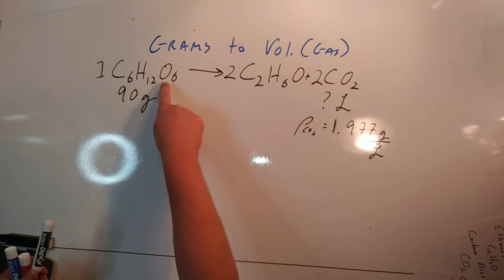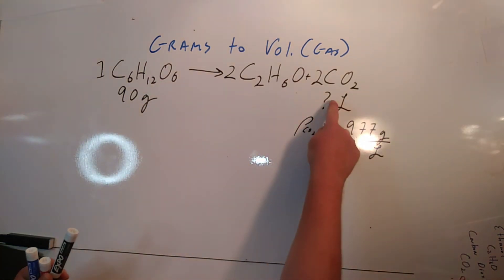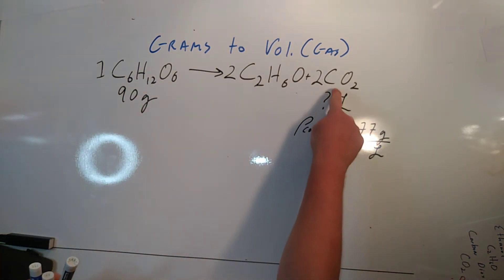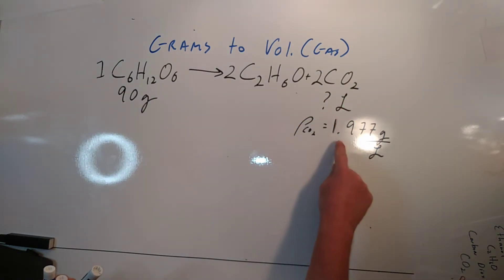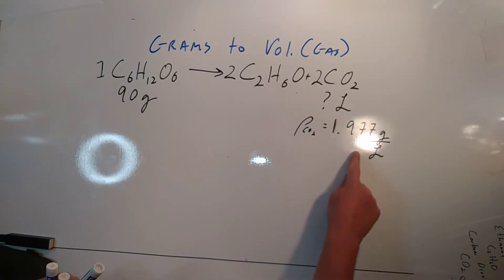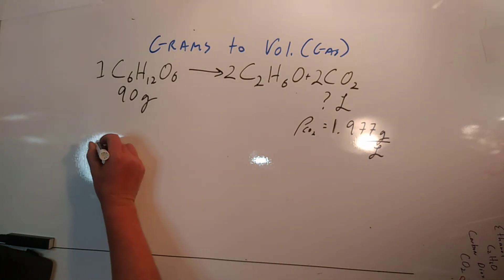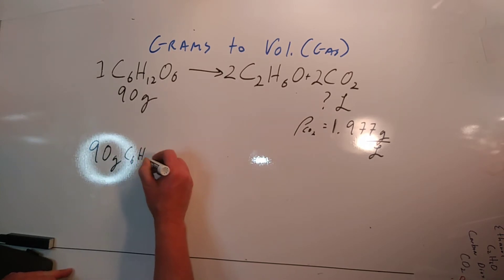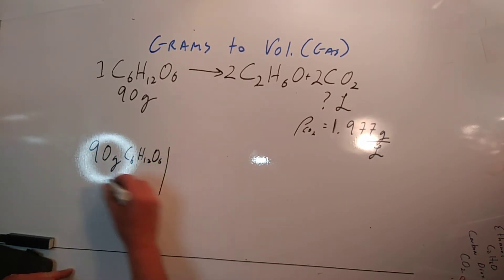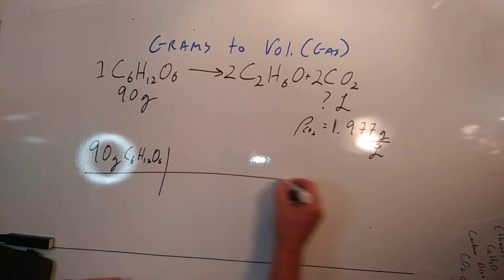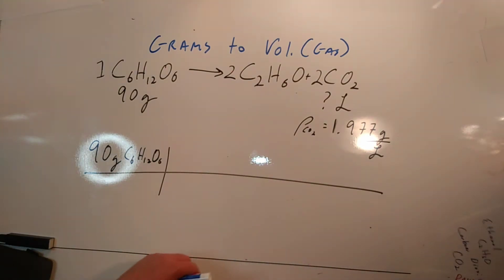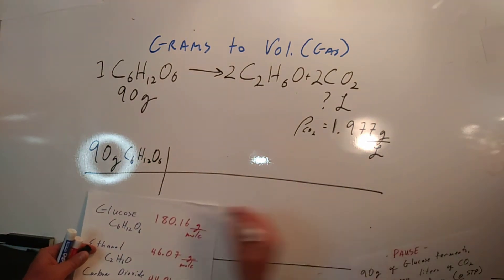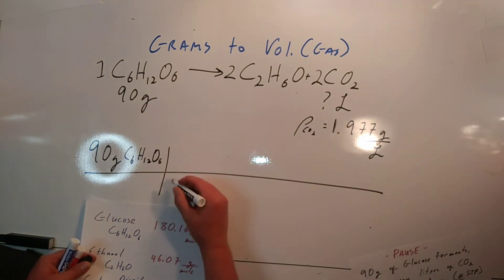90 grams of glucose will produce so many grams of CO2, and we can use the density of CO2 gas to predict how many liters could be produced. For 90 grams of glucose, look up the formula of glucose from the periodic table.